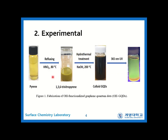To fabricate the OH-GQDs, we combined pyrene and nitric acid and refluxed the mixture. After filtration and drying, we obtained 1,3,6-trinitropyrine. Then we dispersed it into sodium hydroxide solution and put it through a hydrothermal process. Finally, we could obtain OH-GQDs and confirmed the quantum confinement effect using UV light.